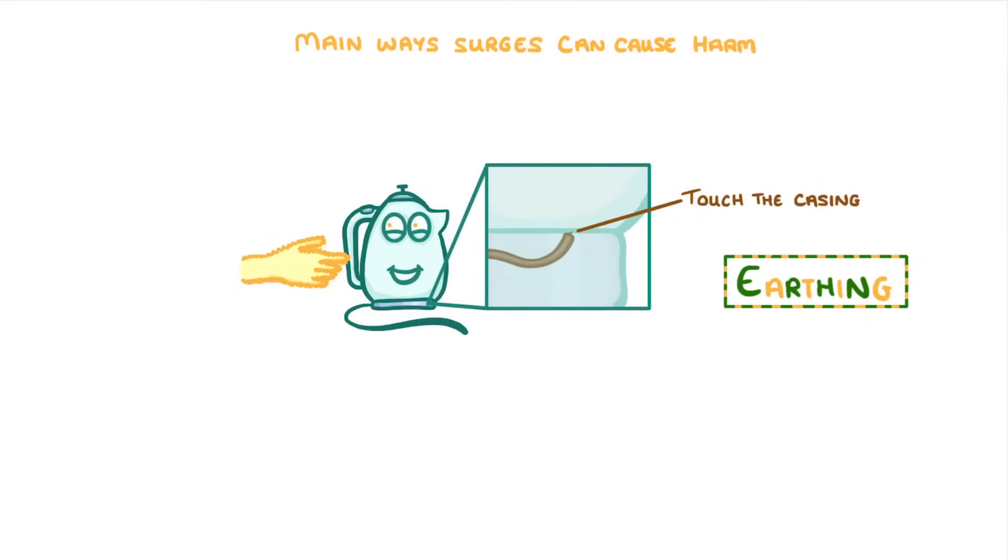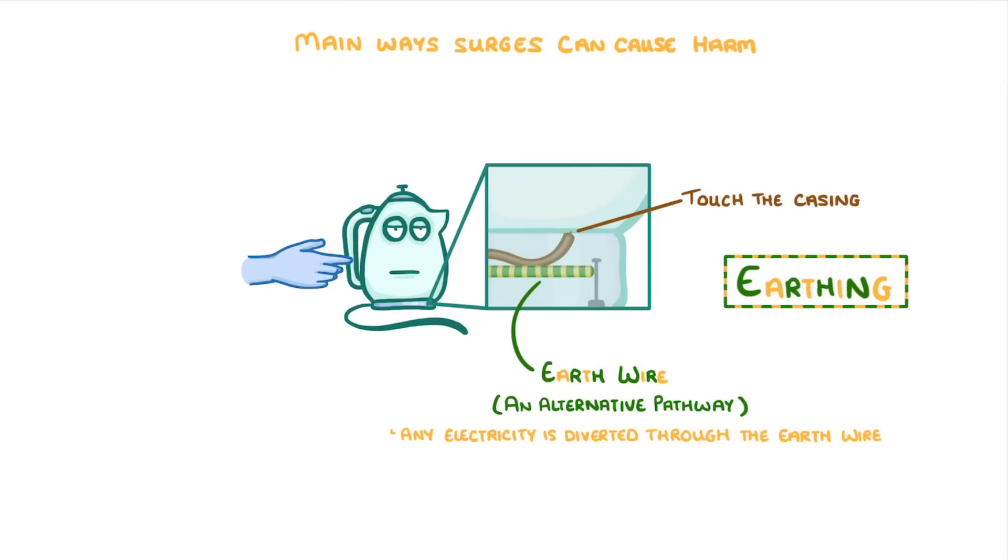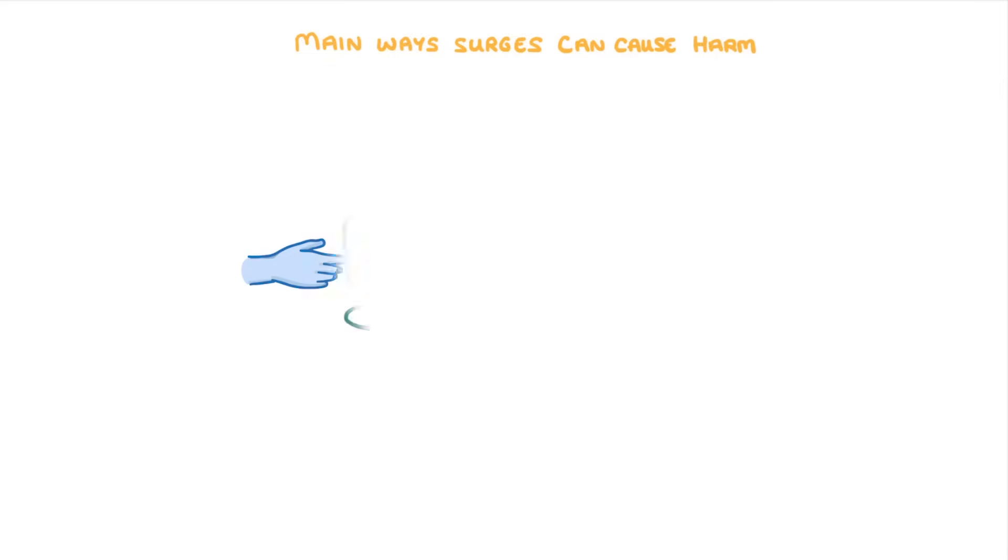One way to prevent this is by earthing, which is where an earth wire provides an alternative pathway for the current to flow away, so that any electricity is diverted through the earth wire rather than coming through us.